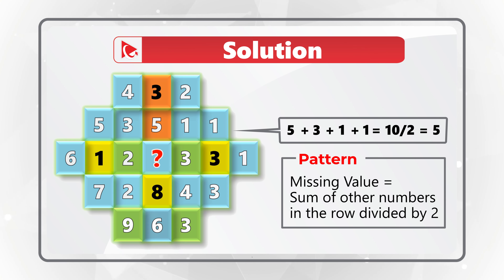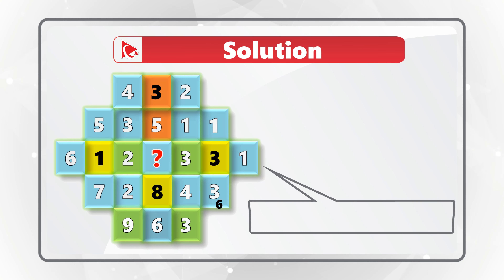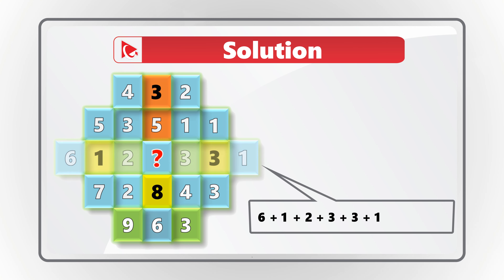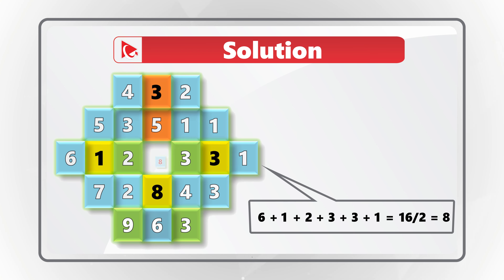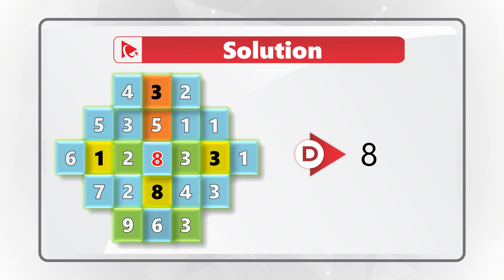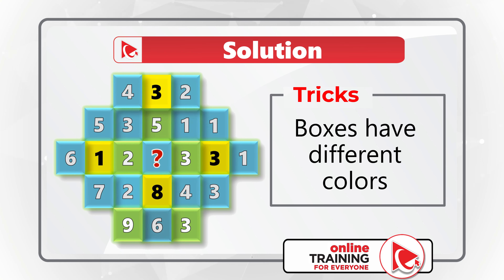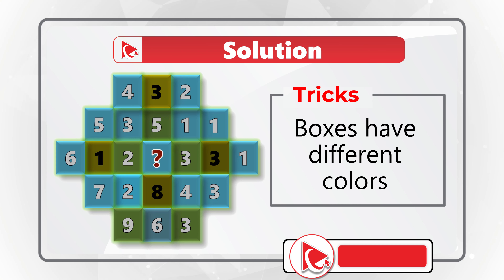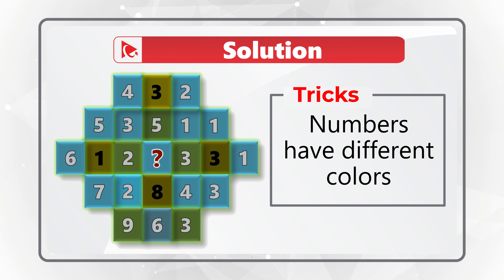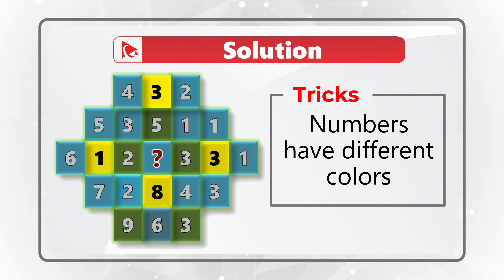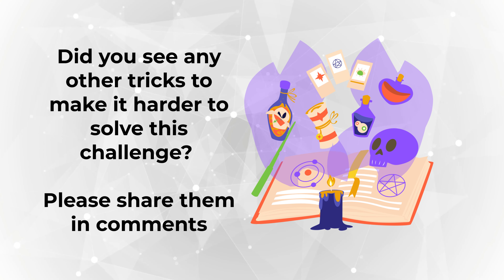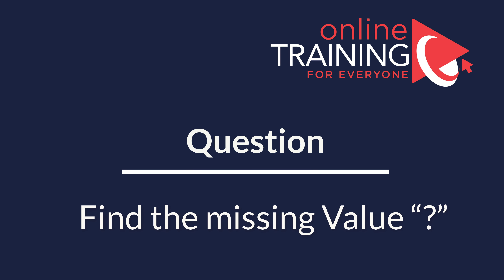The middle row is calculated as the sum of all numbers divided by 2: 6 plus 1 plus 2 plus 3 plus 3 plus 1 equals 16, and 16 divided by 2 equals 8. So the correct answer is Choice D: 8. The trick designers used: boxes have different colors (blue, yellow, green) and numbers appear in different colors — black in yellow boxes, white in blue and green boxes. None of this contributes to the pattern calculations.